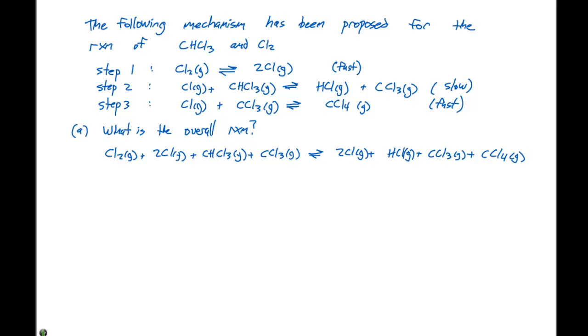So if we look at this, we see that Cl shows up on both sides of our particular reaction, and CCl3 also shows up on both sides of the reaction. That gives an overall reaction of Cl2 gas plus CHCl3 gas in equilibrium with HCl gas plus CCl4 gas.